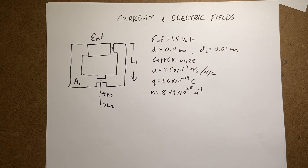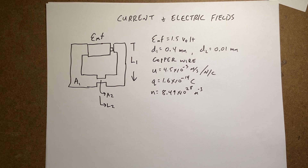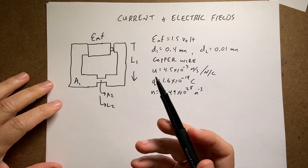Let's use the junction rule and the loop rule to find the electric current and the value of the electric field in the circuit.